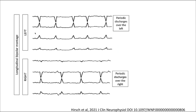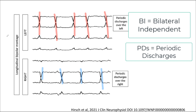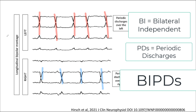Here we see periodic discharges in the left hemisphere occurring at a predictable interval, but also discharges in the right hemisphere that appear to have no relationship to those on the left. Here we use the term bilateral independent, abbreviated BI. Because they are periodic discharges, we call these bilaterally independent periodic discharges, or BIPDs.